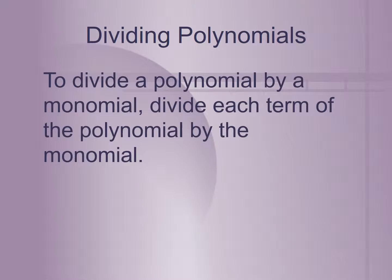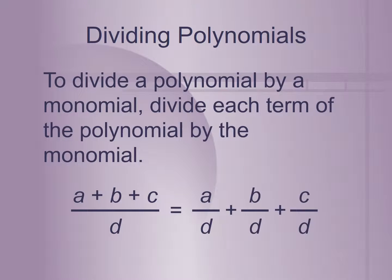To divide a polynomial by a monomial — remember, monomial means one term only — you divide each term of the polynomial by the monomial. For example, if we have a plus b plus c divided by d, we divide each term to get a over d plus b over d plus c over d.